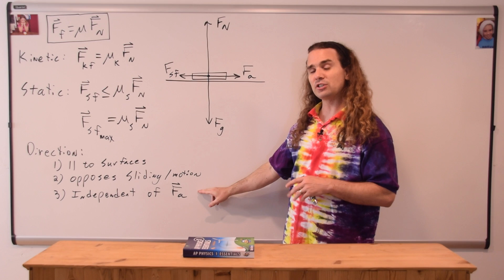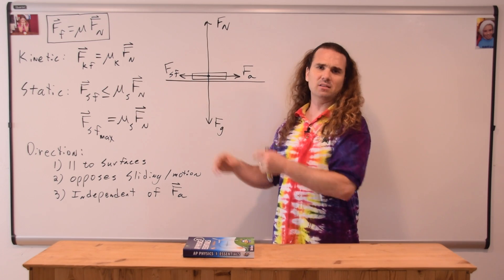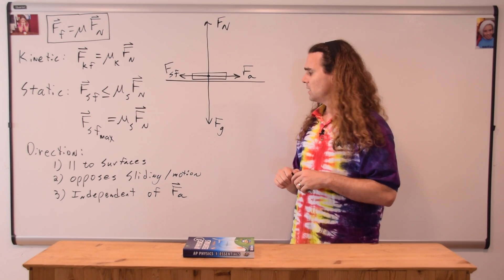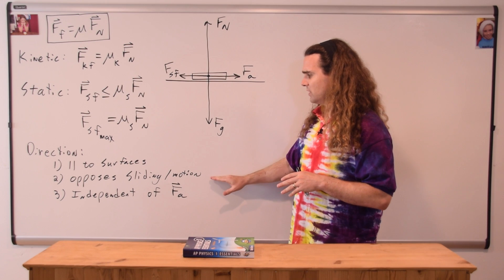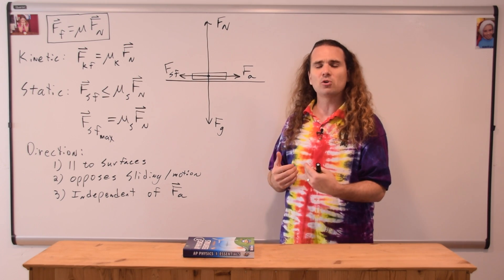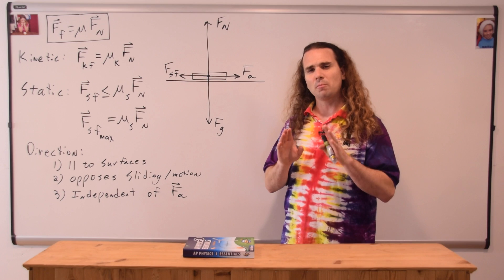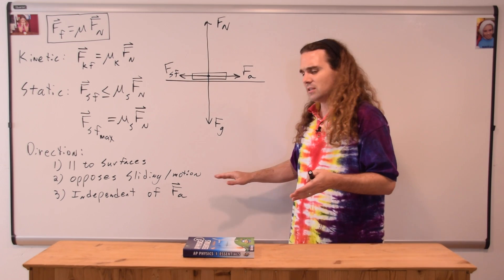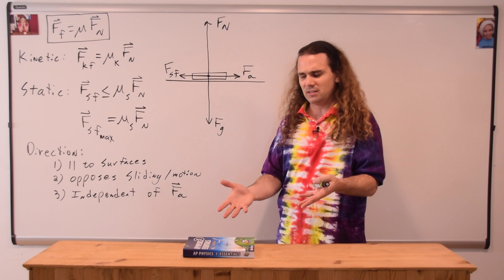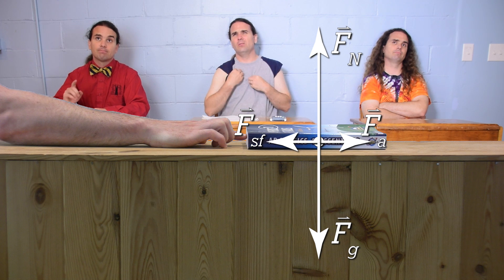As for being independent of the direction of the force applied, that will be covered in later lessons. As for opposing sliding — Bobby explains that the book isn't moving, but if there were no friction, the book would slide to the right. So the force of static friction is preventing the book from sliding to the right, and therefore it acts to the left.